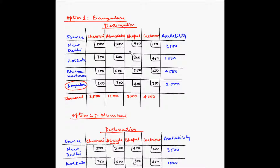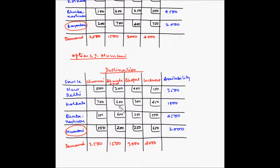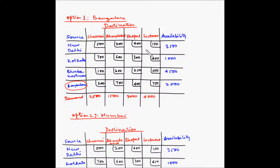This analysis can be considered a what-if analysis. The first option asks: what if Bangalore is our fourth source? The second asks: what if Mumbai is our fourth source? The objective is to find the total cost of transportation under each of these two scenarios.